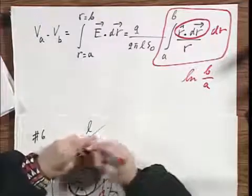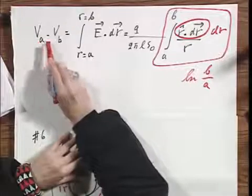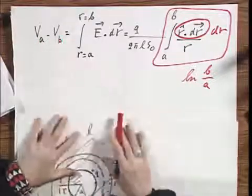And this integral equals the logarithm of B divided by A. And so, since this is positive, since B is larger than A, you see that A has a larger potential than B.